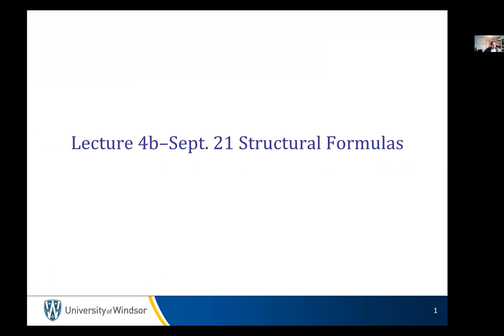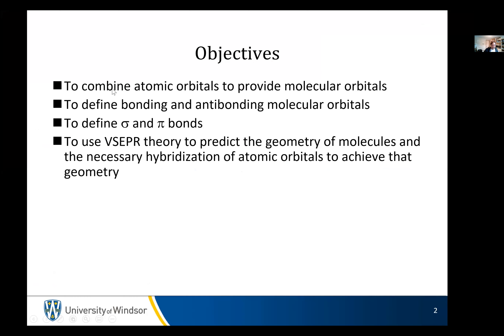Why is the 1s orbital on a carbon atom not one of its valence orbitals? Because it's low energy. We're always going to work at the border of energies. Today's lecture covers atomic orbitals and molecular orbitals, and we're going to define the terms bonding and antibonding molecular orbital. We're also going to work harder at defining pi and sigma — we've seen them before, but now we'll hit them officially.